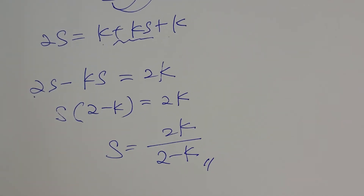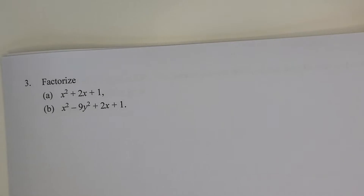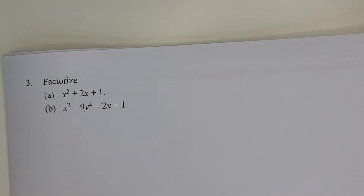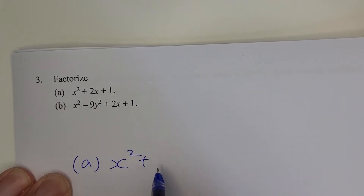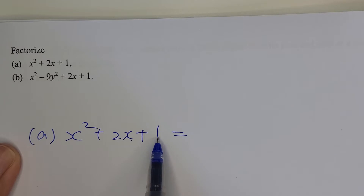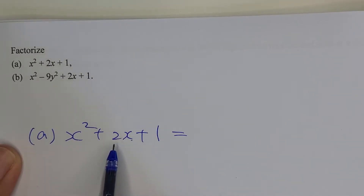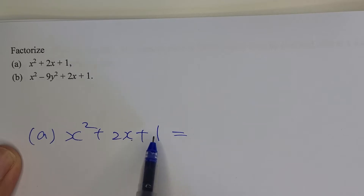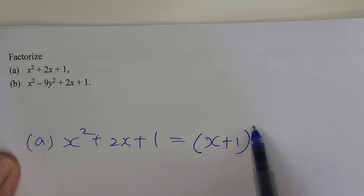Let's move to question number three — factorization. Part a: factorize x squared minus 2x plus 1. This is quite straightforward because you are applying the perfect square formula a squared plus 2ab plus b squared. Here b is 1, since 2 times x times 1 equals 2x and 1 equals 1 squared, so the answer is (x plus 1) squared.